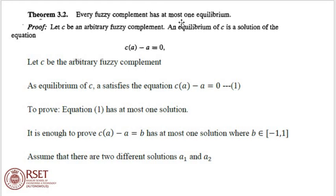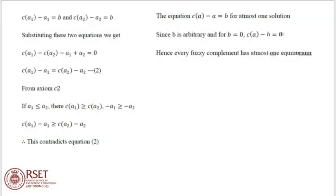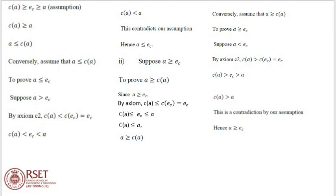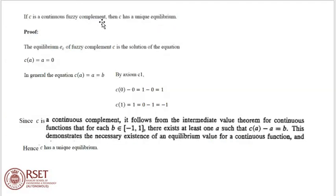Every fuzzy complement has at most one equilibrium. If we assume that the equilibrium is E_c, then A less than or equal to C(A) if and only if A less than or equal to E_c, and A greater than or equal to C(A) if and only if A greater than or equal to E_c. If C is a continuous fuzzy complement, then C has a unique equilibrium.